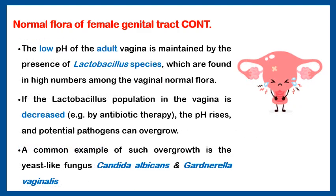The low pH of the adult vagina is maintained by the presence of Lactobacillus species, which ferment sugars to form lactic acid. This acid lowers the pH of the vagina. But if we use antibiotic therapy — continuous-use antibiotics — this will kill a large number of these lactobacilli. And of course, it will disturb the pH level; it will rise, and the potential pathogens can overgrow.